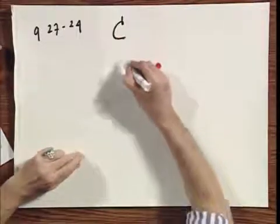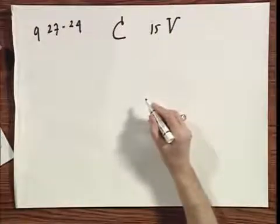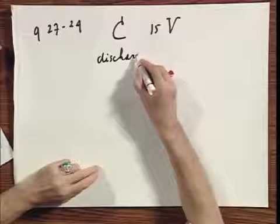We charge a capacitor C, and we charge it to 15 volts. Then we discharge it through a resistor R.